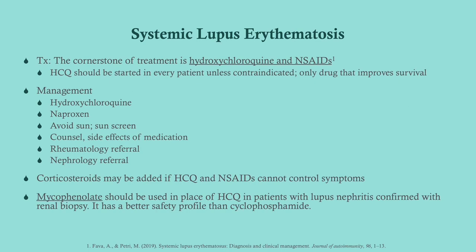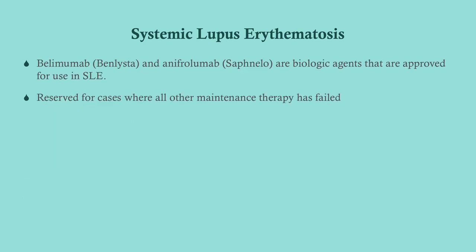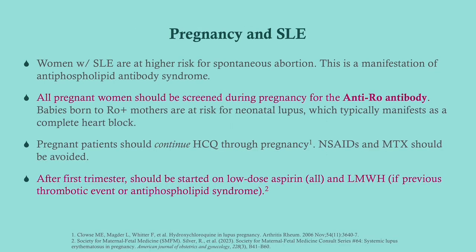Mycophenolate should be used in place of hydroxychloroquine in patients with confirmed lupus nephritis. If a renal biopsy confirms lupus nephritis, give mycophenolate instead. We used to give cyclophosphamide, but now mycophenolate is preferred because it has fewer adverse effects and a better safety profile.